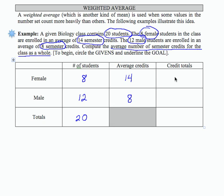To get the credit totals for the class, I'm going to multiply 8 times 14, and that gives me 112. Same thing for the males: 12 times 8 gives me 96. Now I want to add these together because this is the sum of all my credits, so that gives me 208 as a total — 112 plus 96.